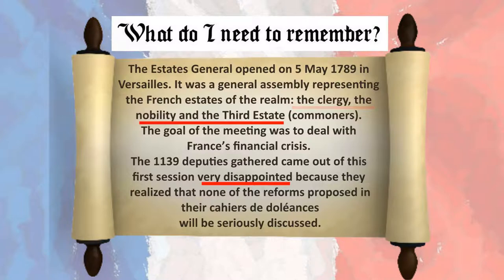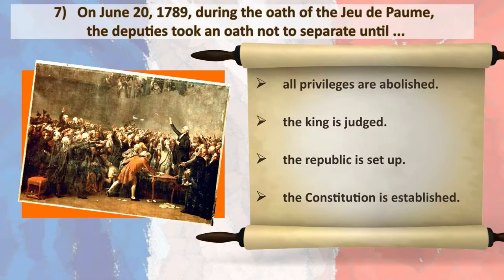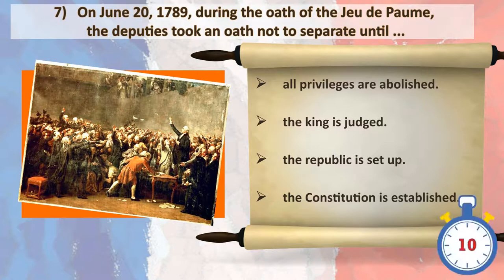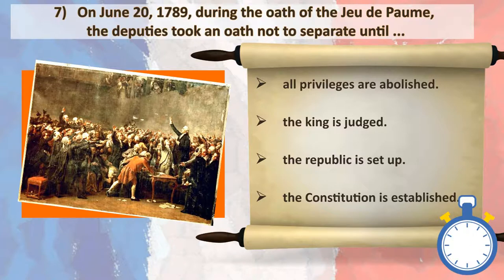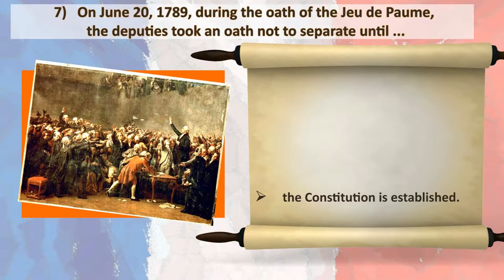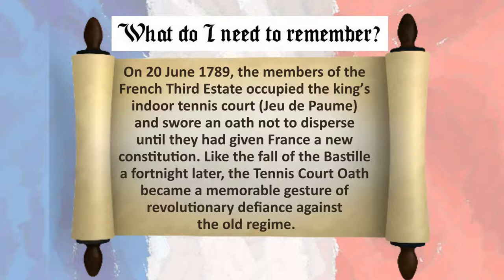On June 20th, 1789, during the oath of the Jeu de Paume, the deputies took an oath not to separate until the constitution was established. The members of the French third estate occupied the king's indoor tennis court, Jeu de Paume, and swore an oath not to disperse until they had given France a new constitution. Like the fall of the Bastille a fortnight later, the Tennis Court Oath became a memorable gesture of revolutionary defiance against the old regime.